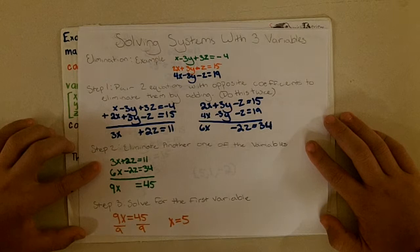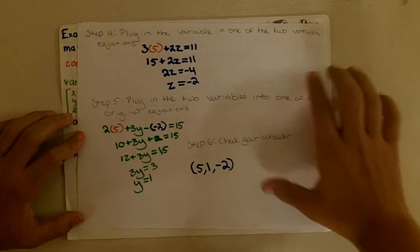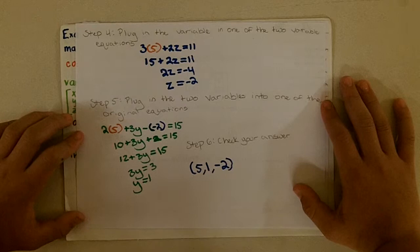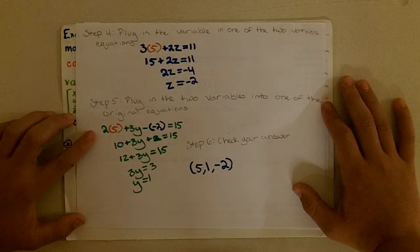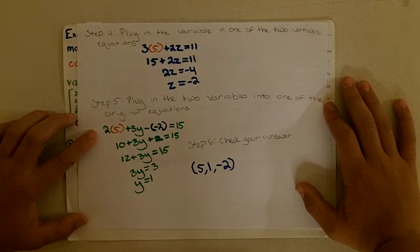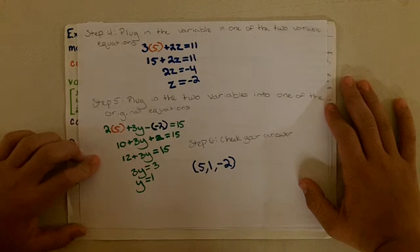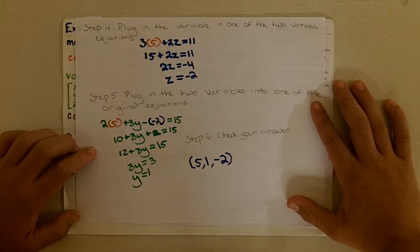Step 3: solve for the remaining variable — 9x equals 45 gives x equals 5. Step 4: plug x into one of the two-variable equations: 3 times 5 plus 2z equals 11, so 15 plus 2z equals 11, 2z equals negative 4, and z equals negative 2. Step 5: plug x and z into one of the original equations: 2 times 5 plus 3y minus (negative 2) equals 15, which gives y equals 1. Step 6: check your answer by plugging the values into the other original equations. The final answer is (5, 1, −2), ordered as x, y, z.